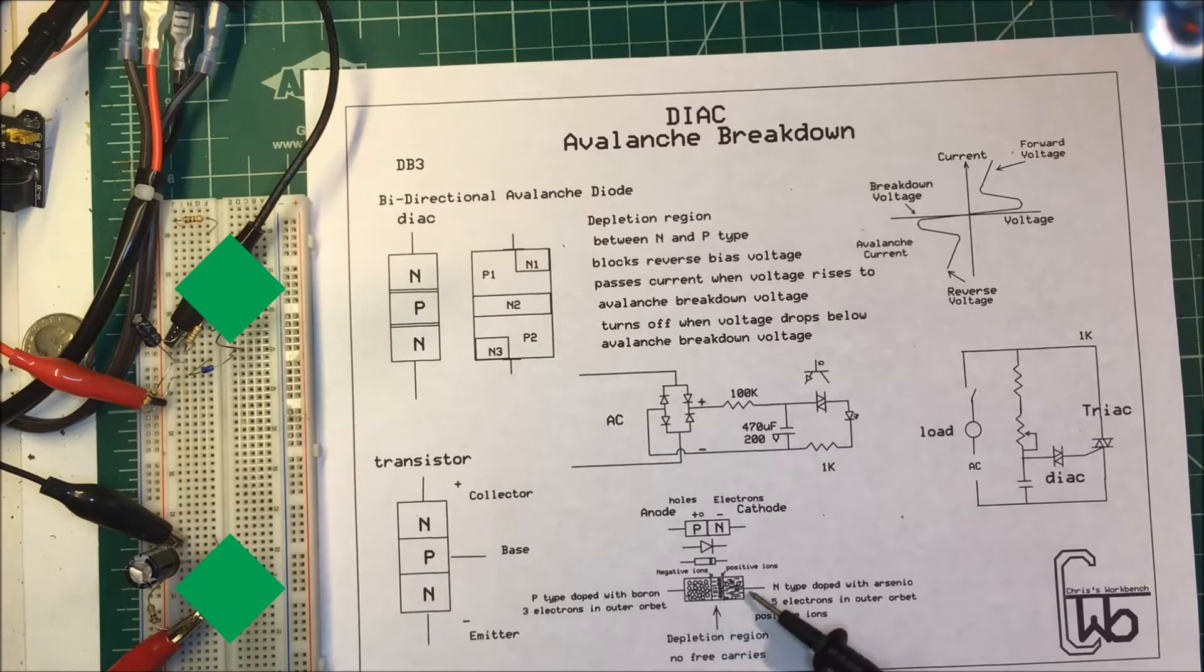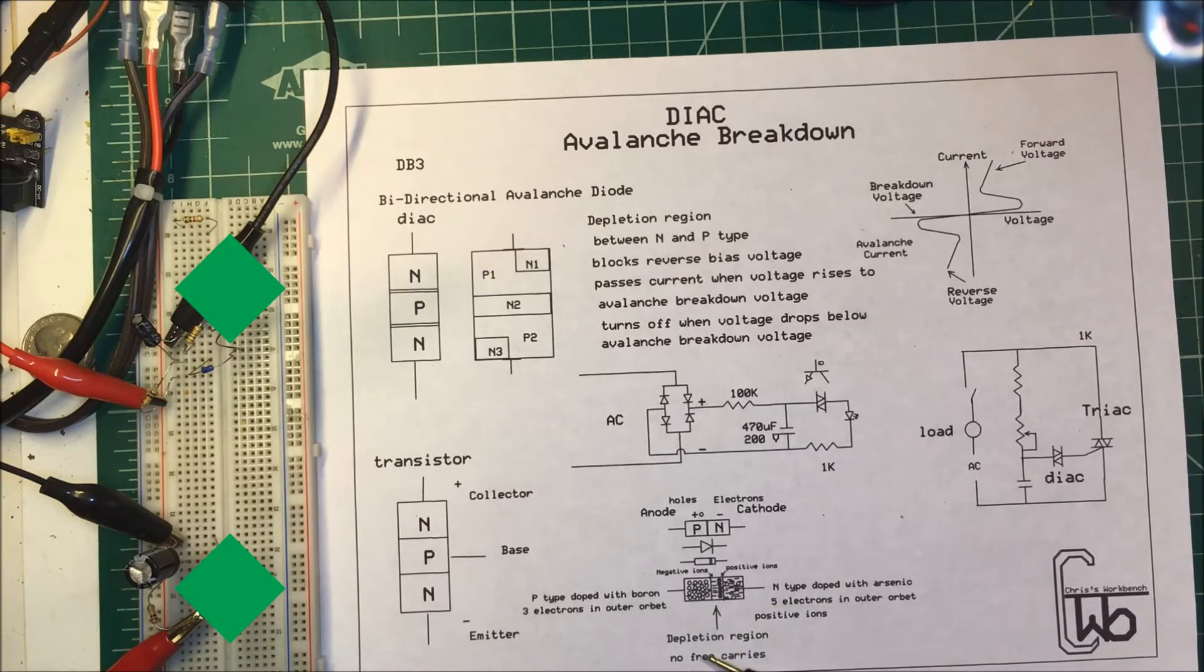Now in the reverse bias we put a positive over here, negative here. What it does is it actually enhances this region here. It creates electric field in the same direction as the electric field is in the depletion region and that's why the diode is good for blocking voltage in one direction and letting it pass in the other direction.